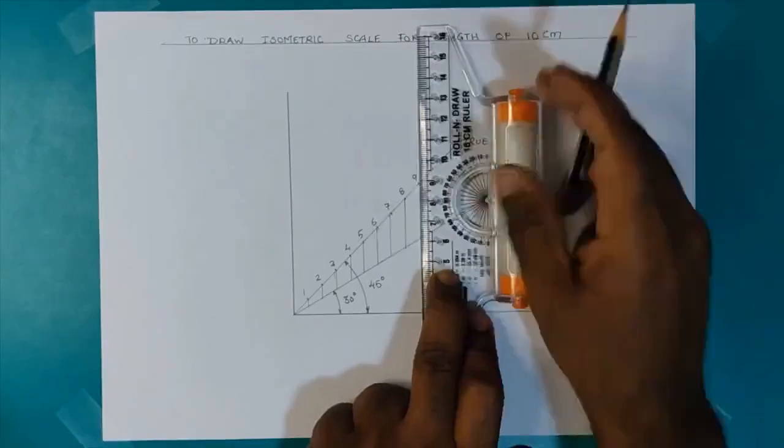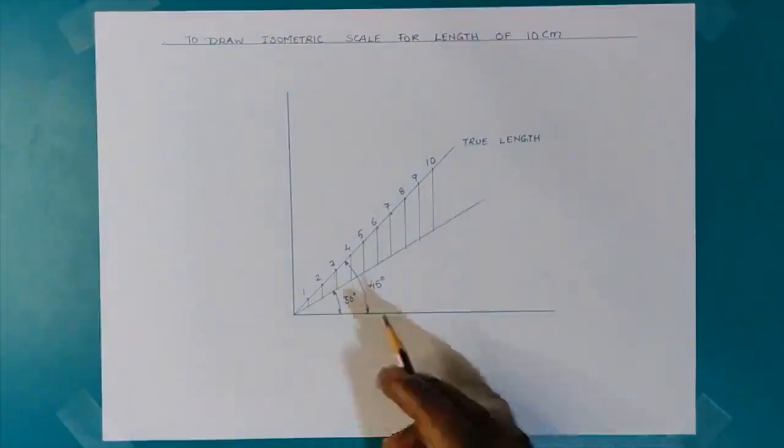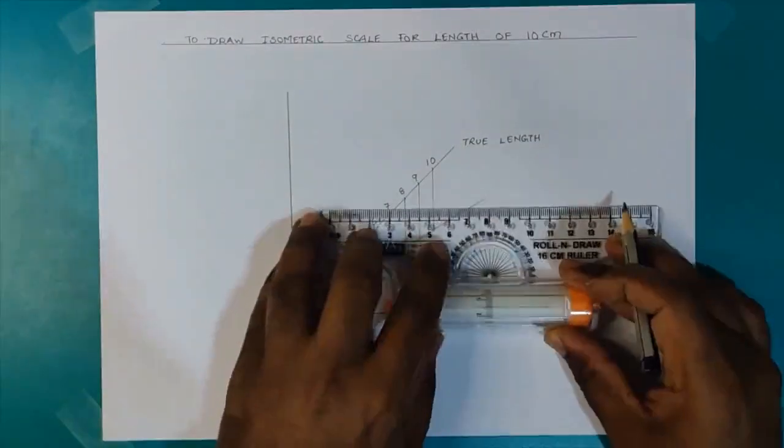9, and 10, and find the intersection with the line inclined at 30 degrees.